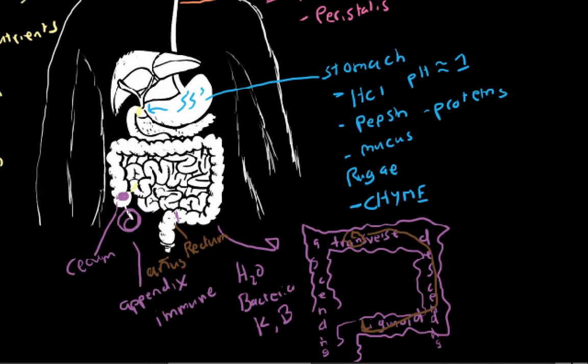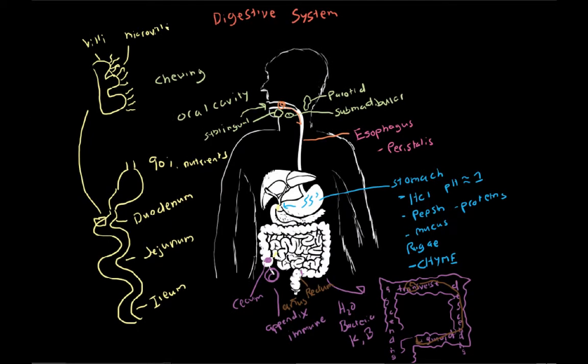And then the anus is where the food and waste passes out of. The food will be stored in the rectum until your body deems an appropriate time to get rid of it. So that's a big picture of the digestive system — we went through all the major organs and major parts. In the next video, we can take a look at the villi and microvilli and see how our digestive system actually absorbs the different macromolecules — carbohydrates, lipids, and proteins.